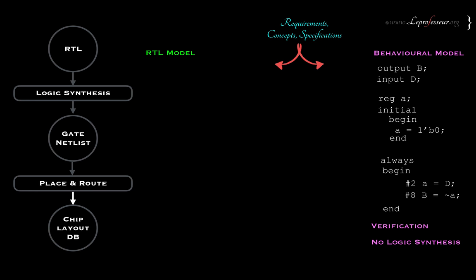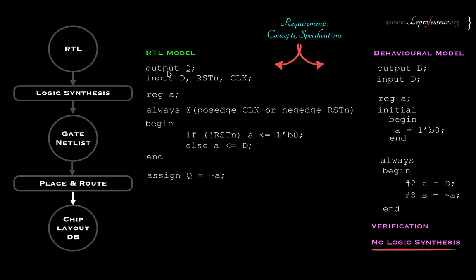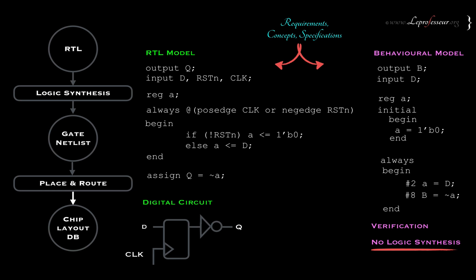How can we write an RTL model? This is a very simple example to show the difference between behavioral and RTL code. You might be familiar with this basic register template. We have output, input, reset, and clock. Within the always block we have clock and active-low reset_n. This is a typical D flip-flop template. It will create register A, and the inverted output of the register goes to Q, the actual output. The circuit can be realized after the logic synthesis step — the output of the register is inverted and given to the output of the circuit.